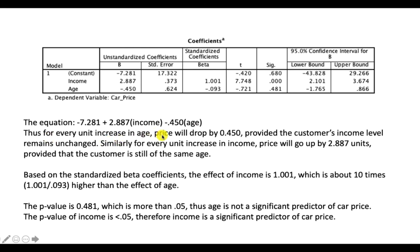For every unit increase in age, price will drop by 0.455, provided that the customer's income level remains unchanged — the negative value explains the drop. For every unit increase in income, price will go up by 2.887 units, provided the customer is the same age. Based on the standardized beta, the effect of income is 1.001 — about 10 times higher than the effect of age. The p-value for age is 0.481, which is more than 0.05, so age is not a significant predictor. The p-value for income is less than 0.05, so income is a significant predictor of car price.